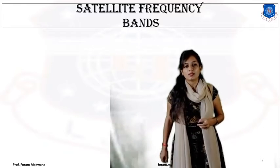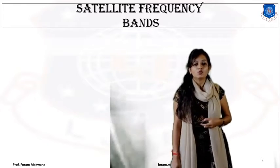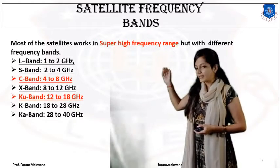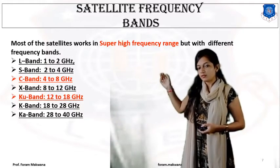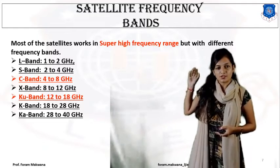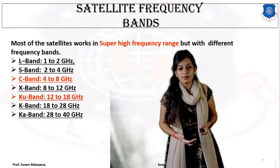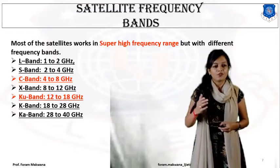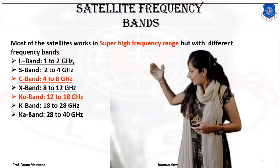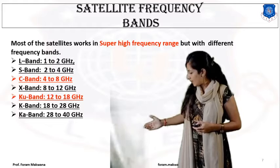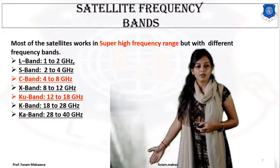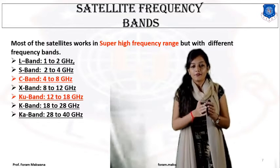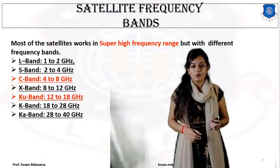Now, on which frequency is the satellite going to be operated? Most satellites work in the super high frequency range but with different frequency bands. The frequency bands are L, S, C, X, K, Ku, and Ka. These naming conventions are used to identify the range of frequency.